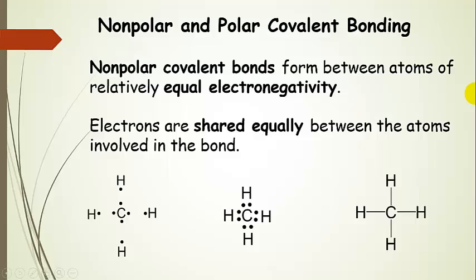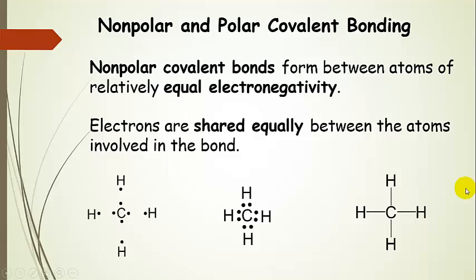When atoms have relatively equal electronegativity, they form nonpolar covalent bonds, meaning electrons are shared relatively equally. The electronegativity for carbon and hydrogen isn't exactly the same, but it's very similar, so we consider carbon-hydrogen bonds to be nonpolar. Carbon has four valence electrons, each hydrogen has one. When everybody shares, carbon is surrounded by eight valence electrons, and each hydrogen has two. The Lewis structure shows these shared electrons as a line instead of dots. This is methane — showing eight electrons around carbon, two in each of those bonds, and two around each hydrogen.